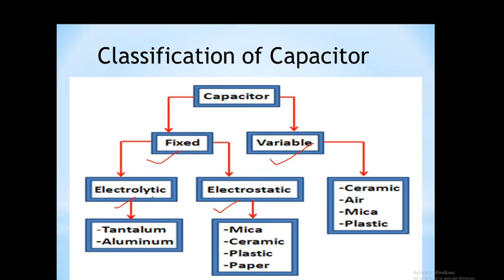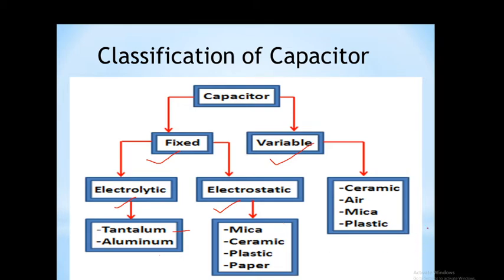Electrolytic capacitor means electrolytic solution is filled between the two conducting plates. Depending on which type of conducting plate is used, the capacitor is classified as tantalum and aluminium capacitor. The electrostatic capacitor is further classified depending on the type of dielectric material used between the two conducting plates, and accordingly the capacitor is classified as mica capacitor, ceramic capacitor, plastic capacitor, and paper capacitor.